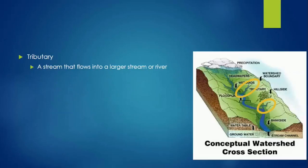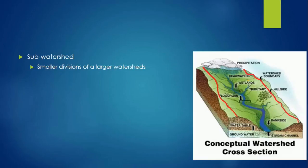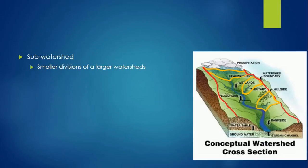Tributaries are streams that flow into larger streams or rivers. Large watersheds can be divided into smaller watersheds, called sub-watersheds. Think of the global and U.S. maps we saw at the beginning. The global map showed the U.S. and three watersheds, but the U.S. map divided those three large watersheds into ten sub-watersheds.